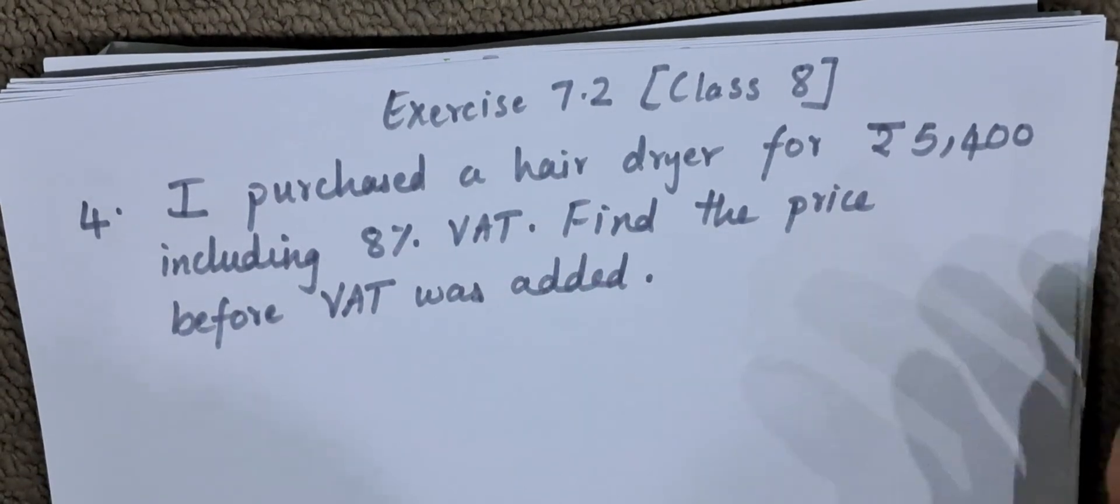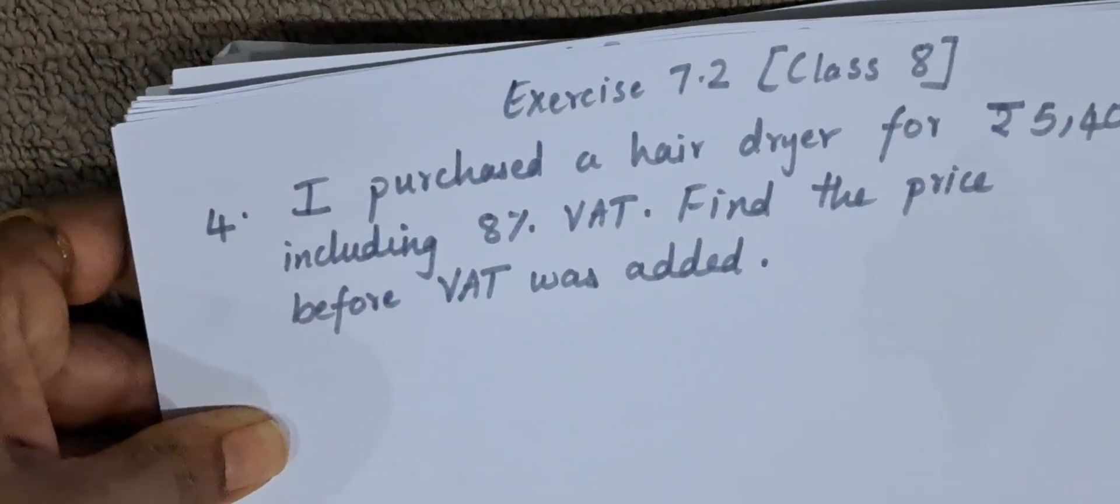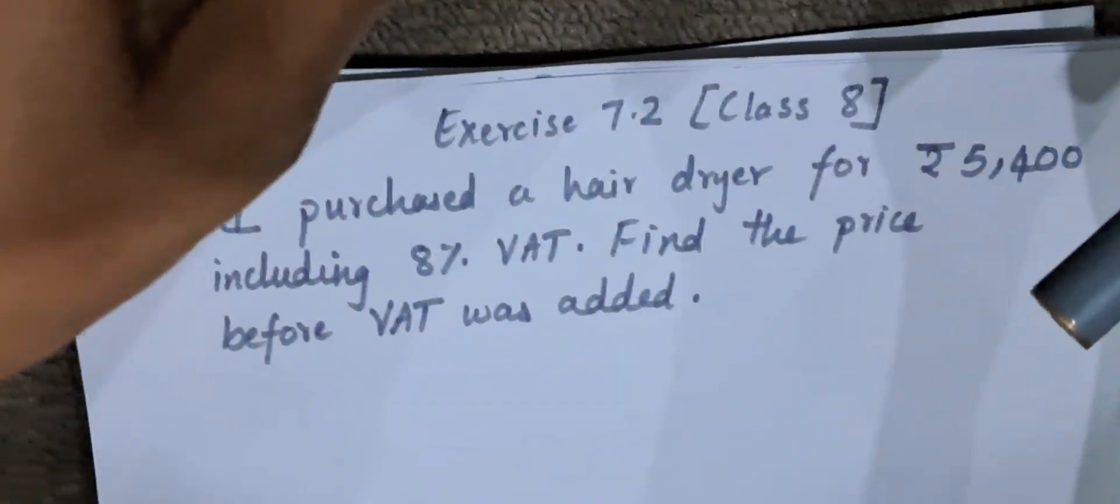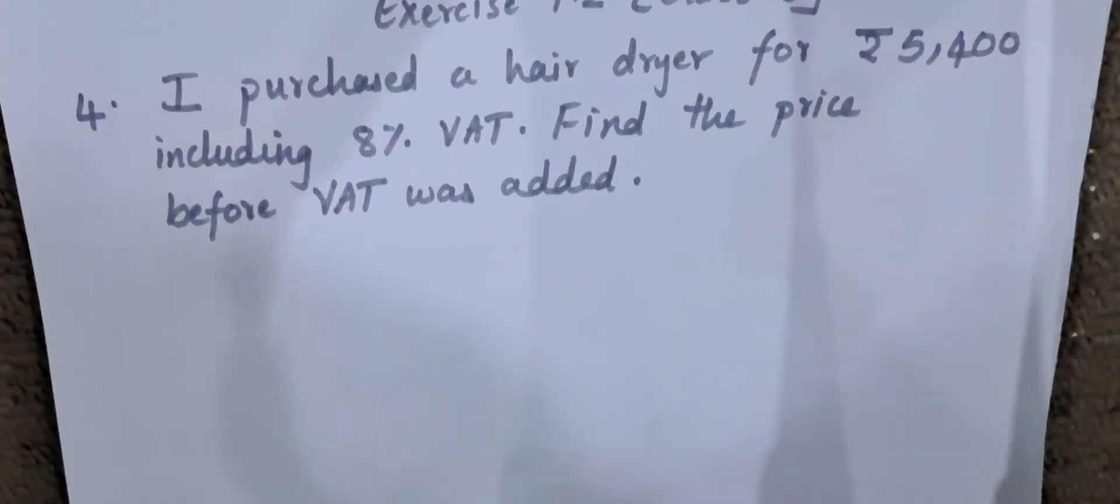The 8% tax is already added and it has become 5,400. And they are telling us to find the price before the tax was added. Now we will do a simple cross multiplication method to find the price before the VAT was added.